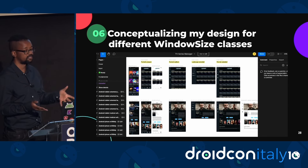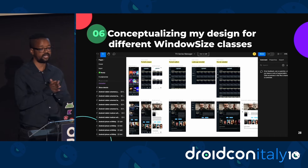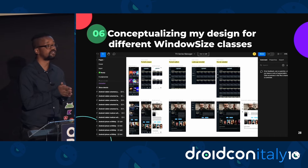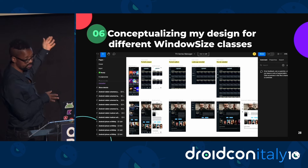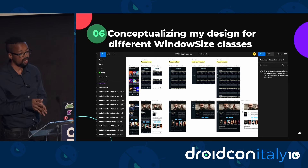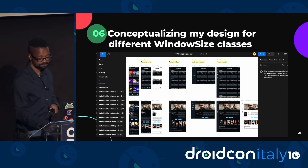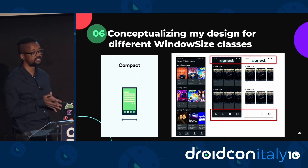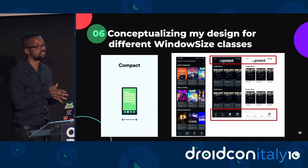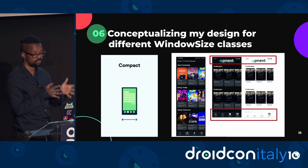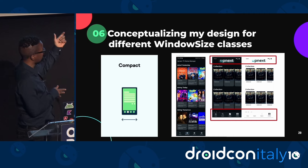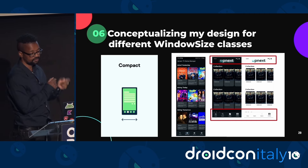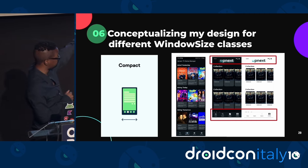Here's an overview of the Figma designs for the dashboard, explore, account and show detail screen for each window size class that Michiel provided. For the compact layout, the design includes an updated bottom navigation menu order where search is now the second item in the list instead of the first, and the top bar now has the Upnext logo in the center, updated from just having text.